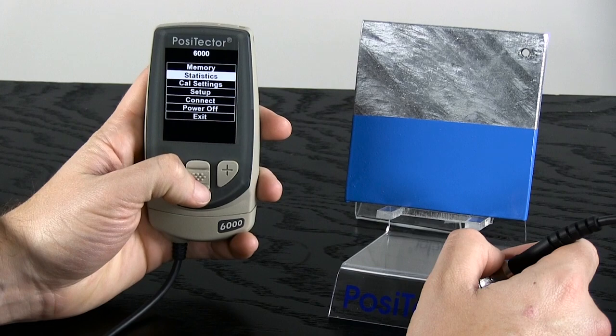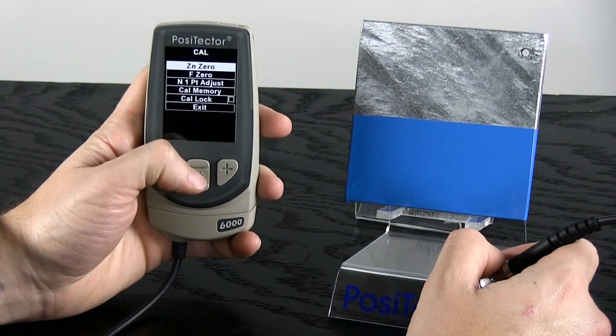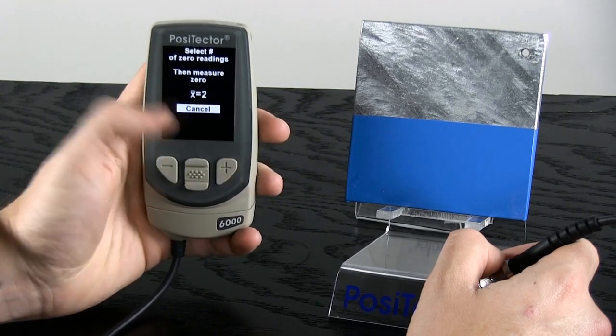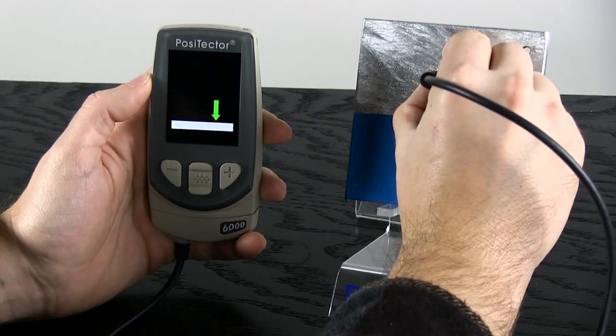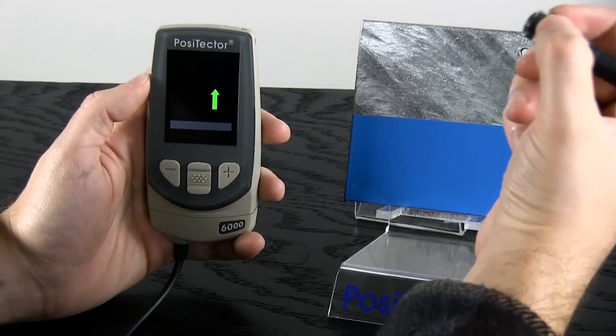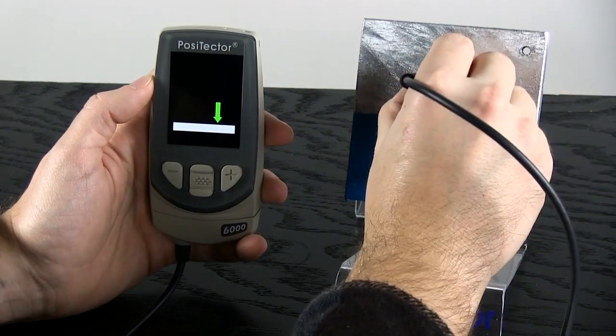For best results, particularly on rough zinc surfaces, zero the probe on the surface of the zinc by taking several readings on the representative galvanized structure. This value is stored and used for all future readings.